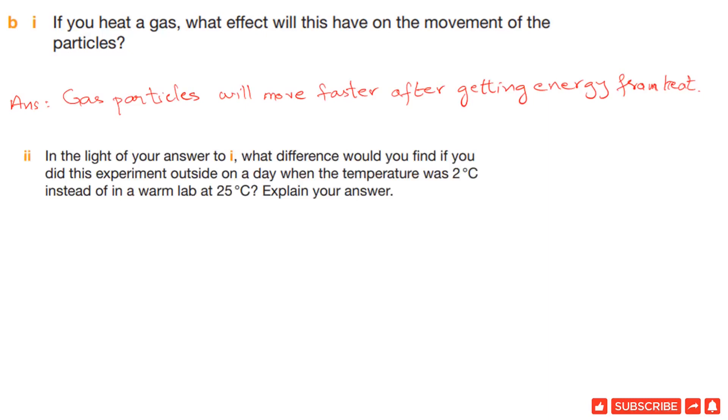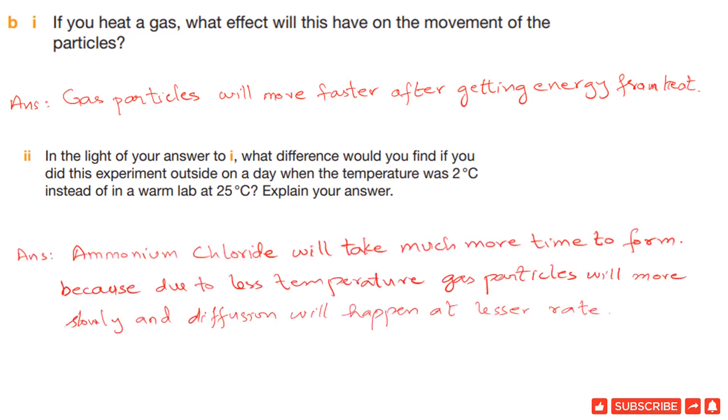Second question. In light of your answer to 1, what difference would you find if you did this experiment outside on a day when temperature was 2 degrees Celsius instead of in a warm lab at 25 degrees Celsius? Answer: Ammonium chloride will take much more time to form because due to less temperature, gas particles will move slowly and diffusion will happen at a lesser rate.